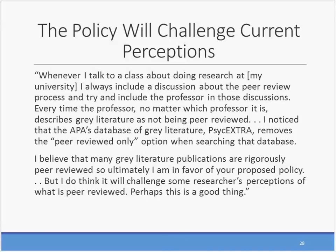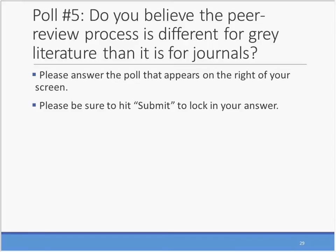This leads us to our next question: do you believe the peer review process is different for gray literature than it is for journals? We've heard this feedback a lot through our various audiences, especially for IES-published reports. In our experience, the quality of peer review processes for journals varies quite a bit, as does the quality of the peer review process for non-journals. After we get the results from the poll, we'll discuss this more.